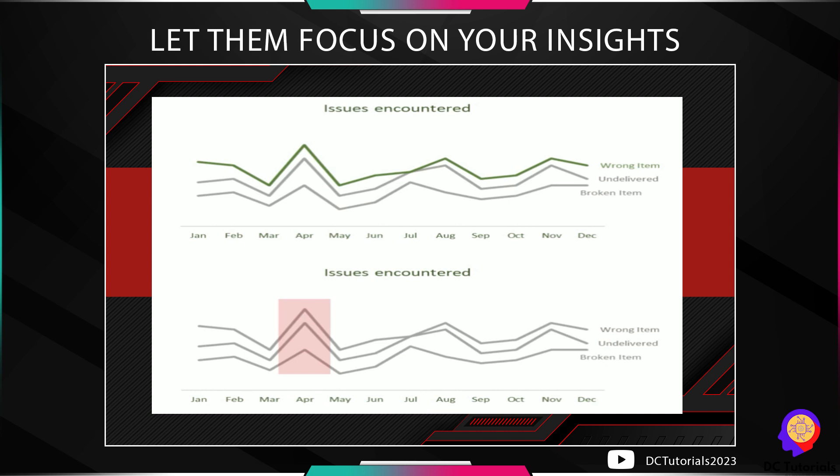For example, if you want your audience to focus on a wrong items issue, you will gray out everything else and make the line for wrong items shine — the first thing the audience notices will be the colored line. On the other hand, you can gray out all lines and enclose the month of April in a red space, perhaps because April is the peak of operations or has the highest issues across all months. This is how we use colors in our charts to make insights visible.